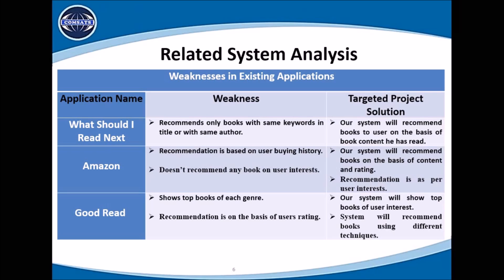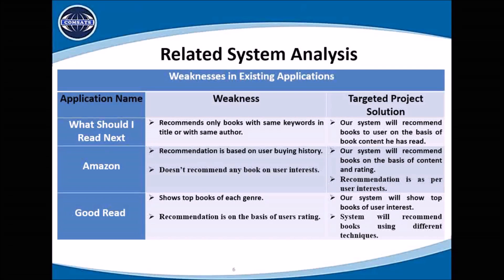Related System Analysis: Some of the related systems are What Should I Read Next, Amazon, and Goodreads. The weakness of What Should I Read Next is that it recommends only books with the same keywords in the title or with the same author. Our system will recommend books to users on the basis of book content they have read. Amazon recommendation is based on user buying history and does not recommend books based on user interest. Our system will recommend books on the basis of content and rating.